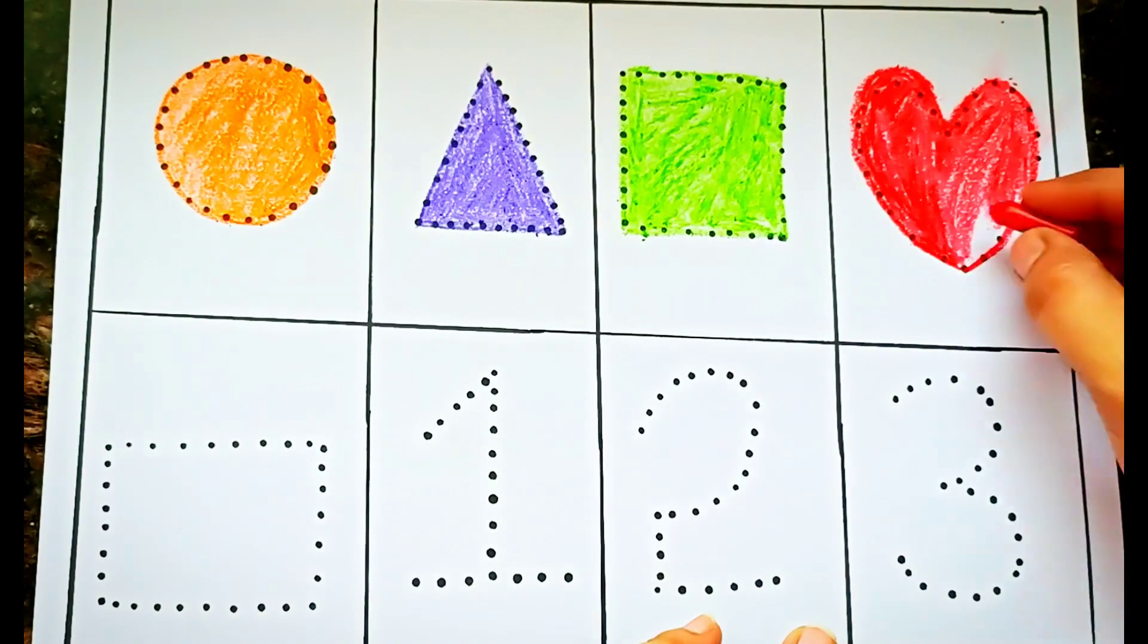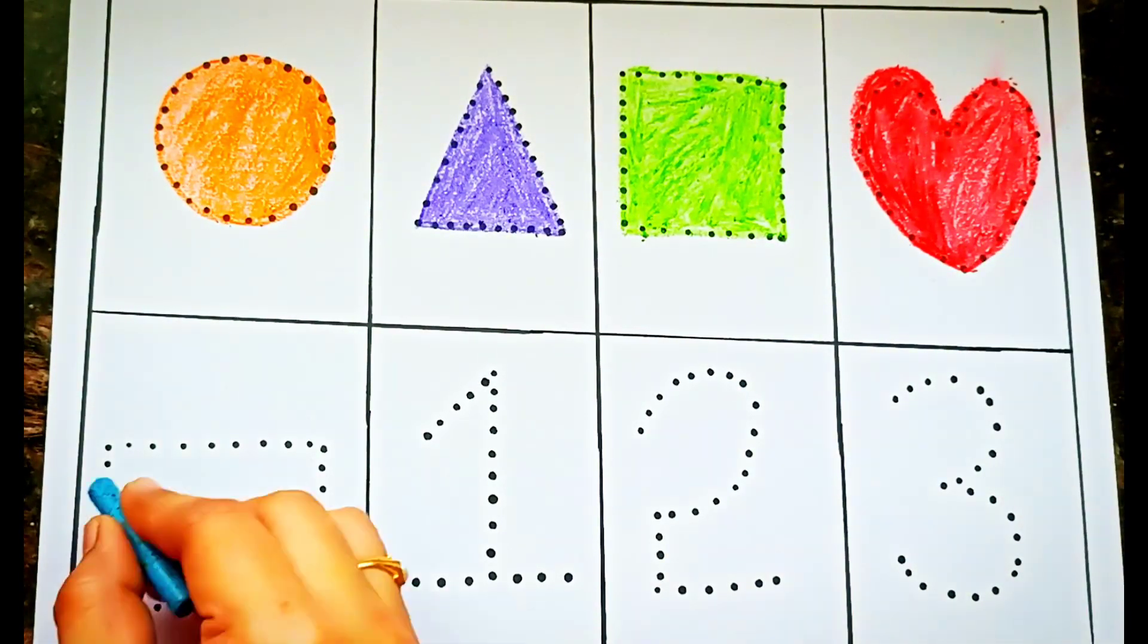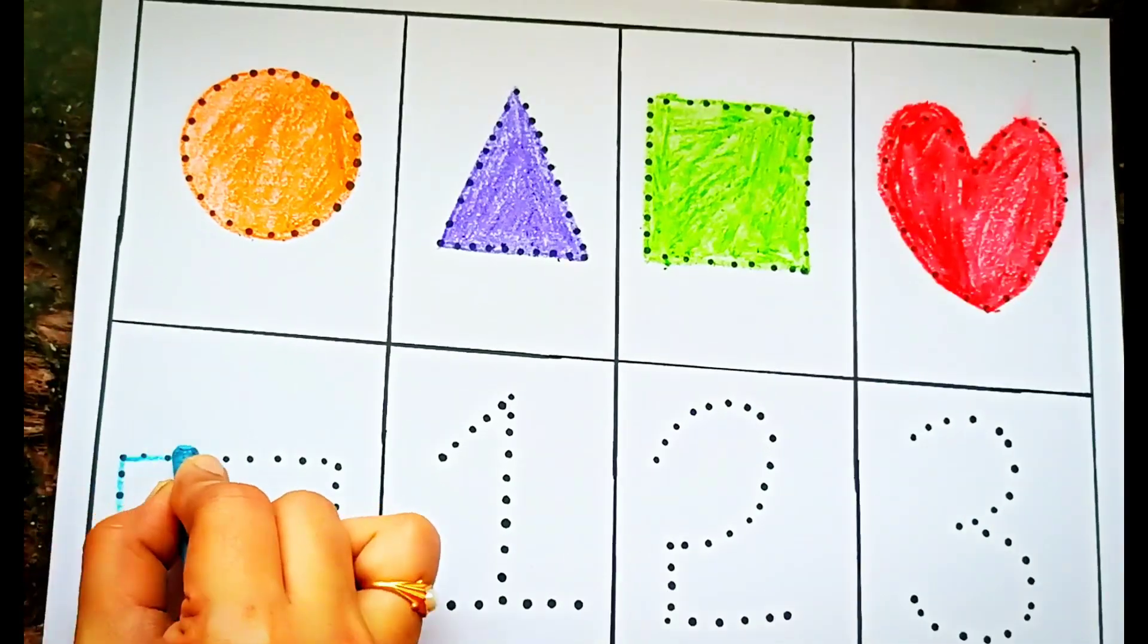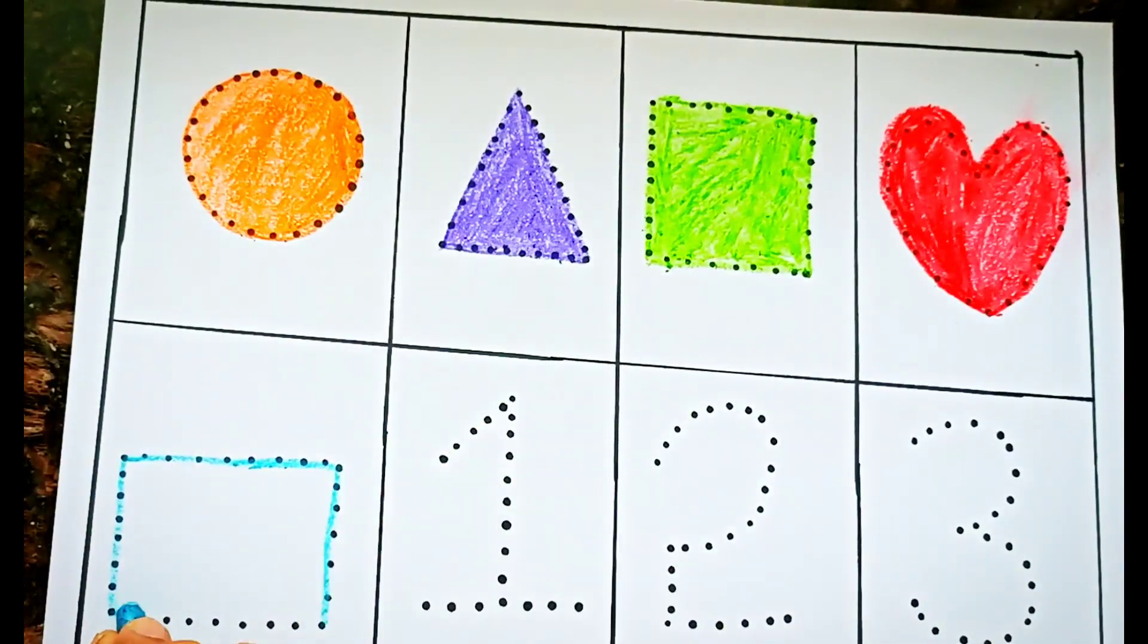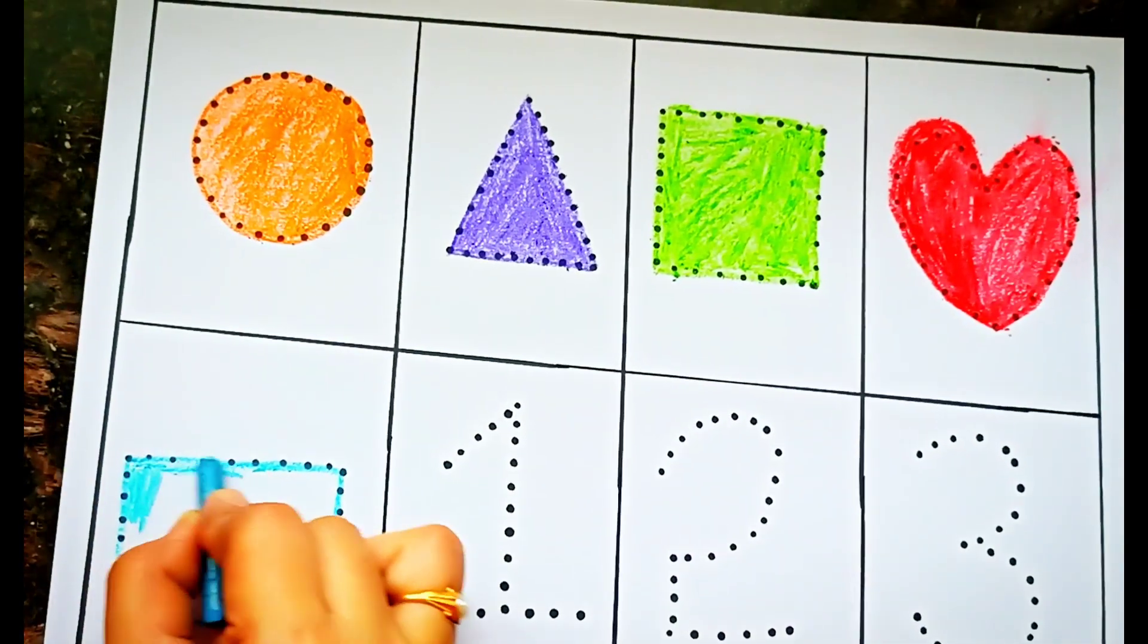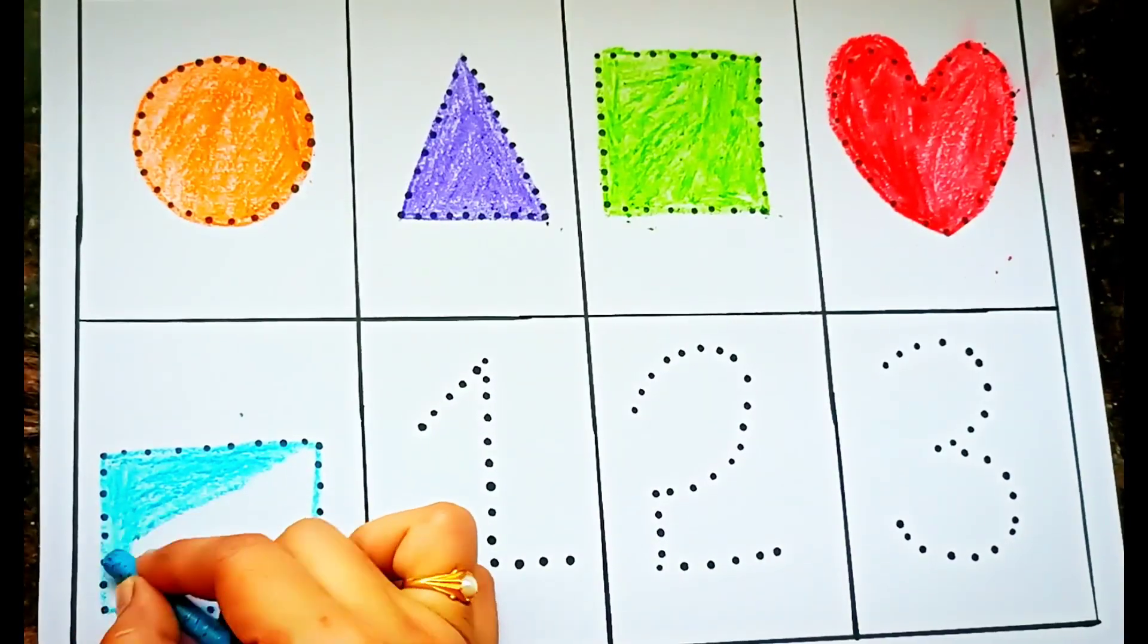And the last shape is rectangle. Let us draw a rectangle in blue color.